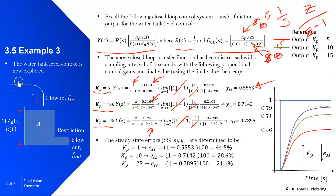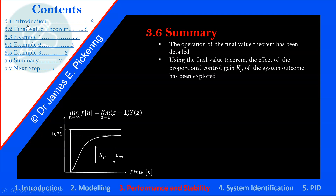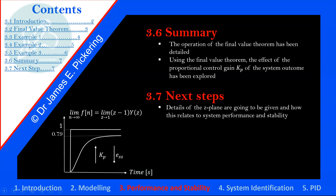In summary, we've looked at the operation of the final value theorem and used it to investigate the effect of proportional control gain on system output. Increasing proportional control gain decreases the steady state error, but for a second order system it will introduce more oscillations in the system response, and in practice the gain is limited. Next steps we're going to look at the z-plane. If you have any questions please feel free to email me.